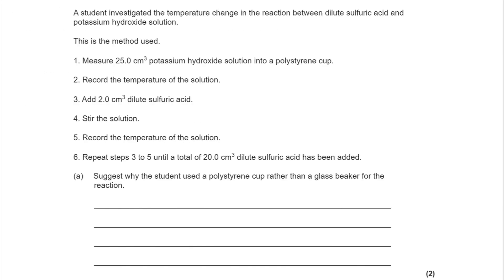For the first part, a student investigated the temperature change in the reaction between dilute sulfuric acid and potassium hydroxide solution. You can read through that method at your leisure, but the question here is why did the student use a polystyrene cup rather than a glass beaker for the reaction. The reason is that polystyrene is a better insulator. Bear in mind this is a two mark answer, so we're going to need more than that. Because it's a better insulator, it means we're going to lose less heat to the surroundings.